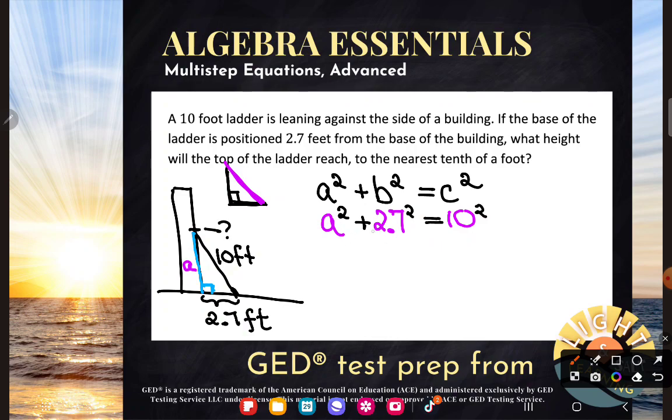On the left-hand side, I can't simplify A squared. But I sure can do 2.7 squared since it's a number. So I'll do that in my calculator. 2.7 squared is 7.29. And that's going to be equivalent to whatever I get when I square 10, which hopefully you know 10 squared is 100. But if not, your calculator can do that for you.